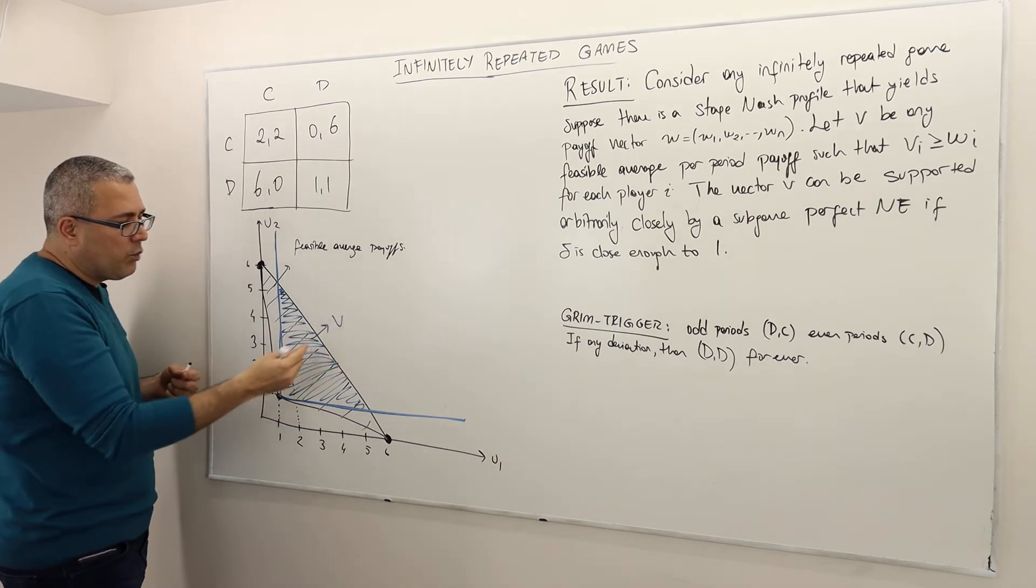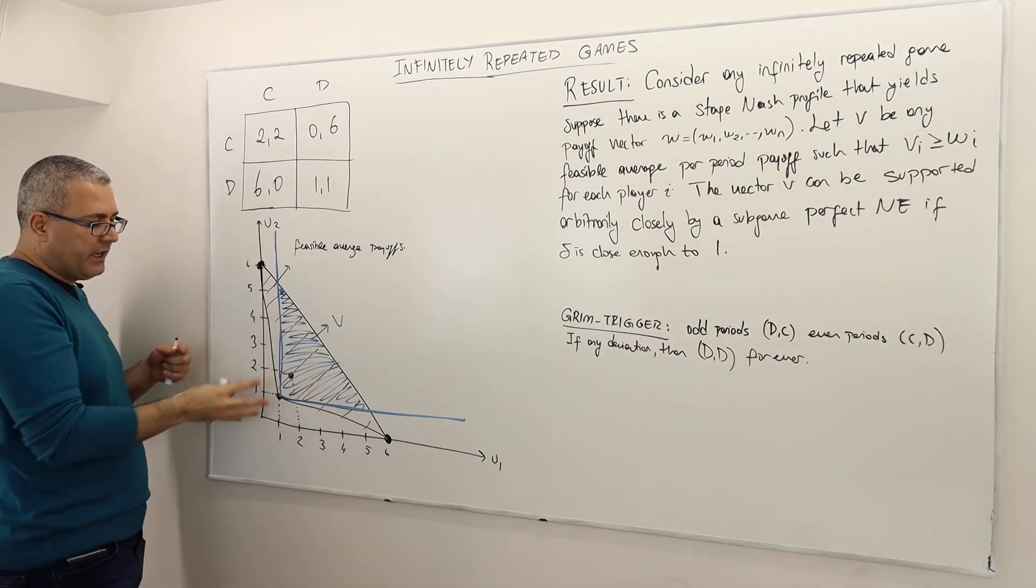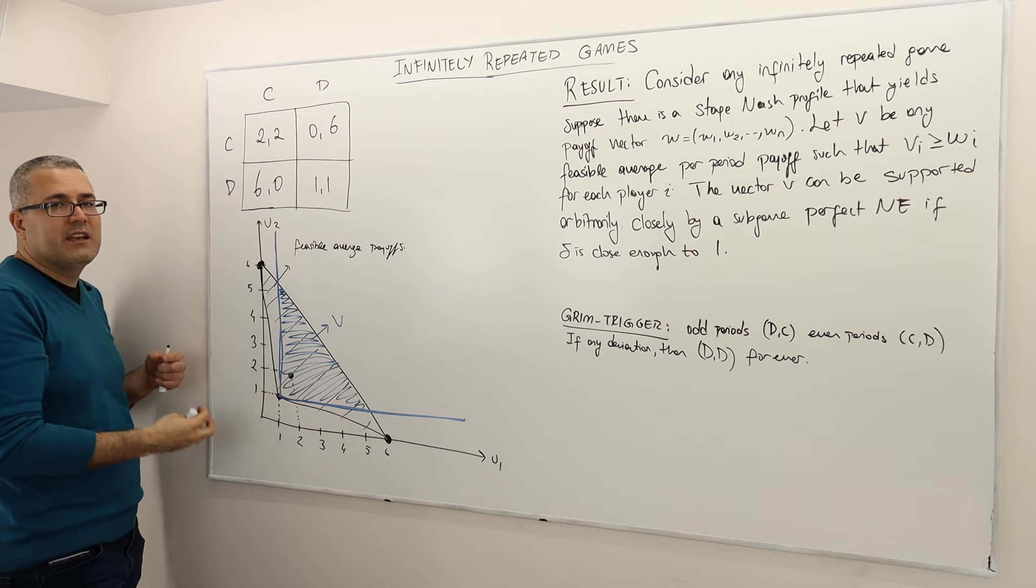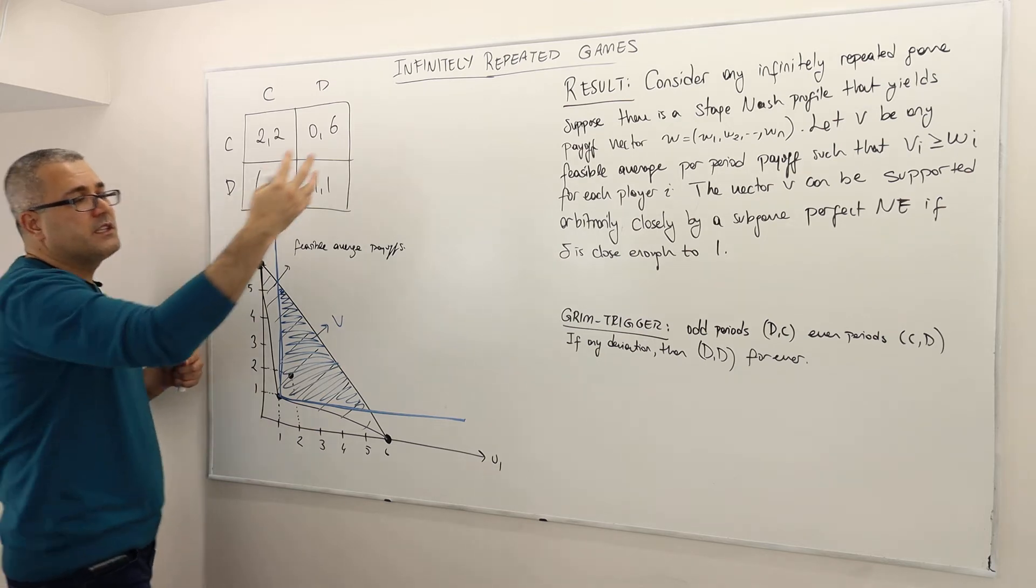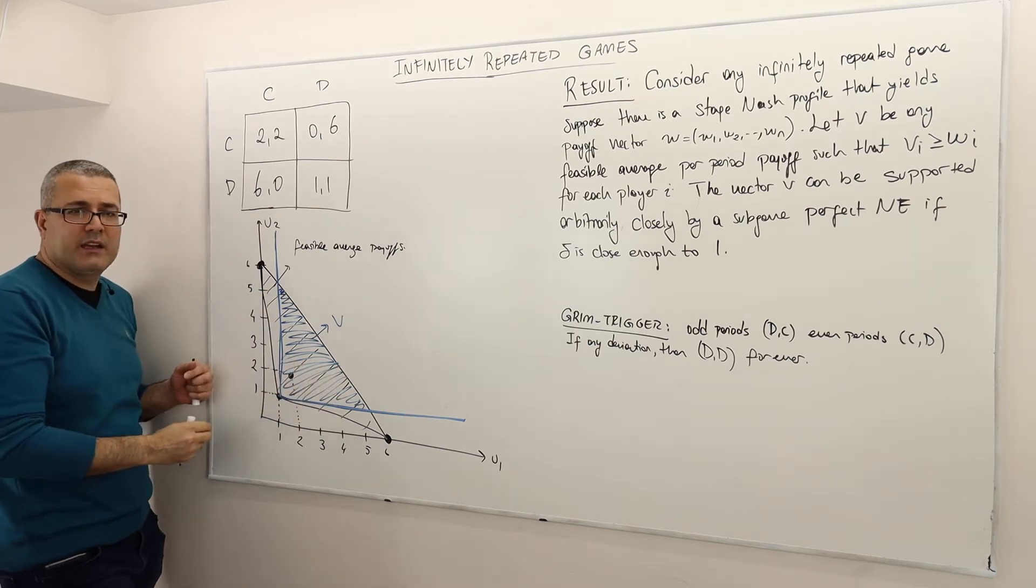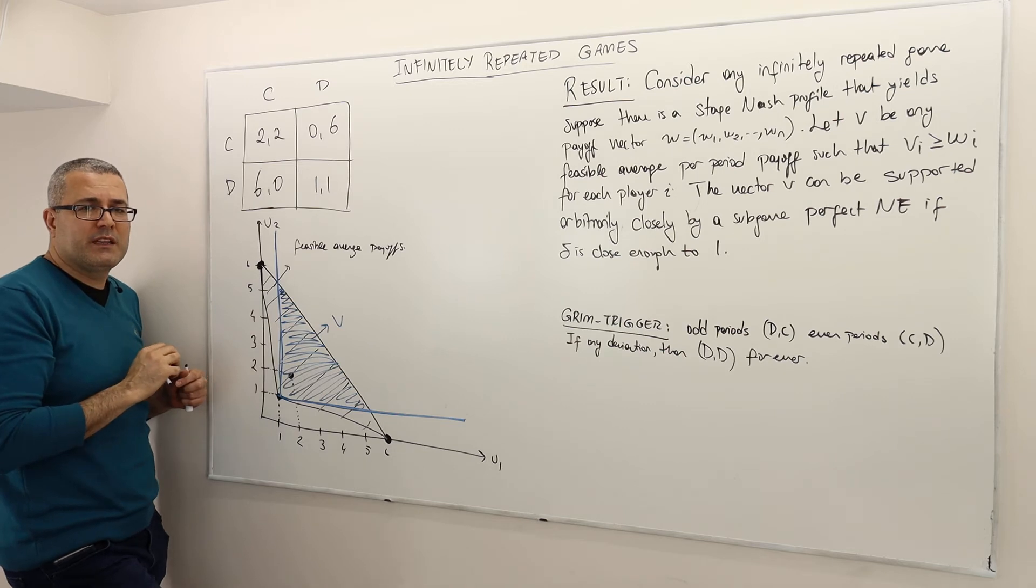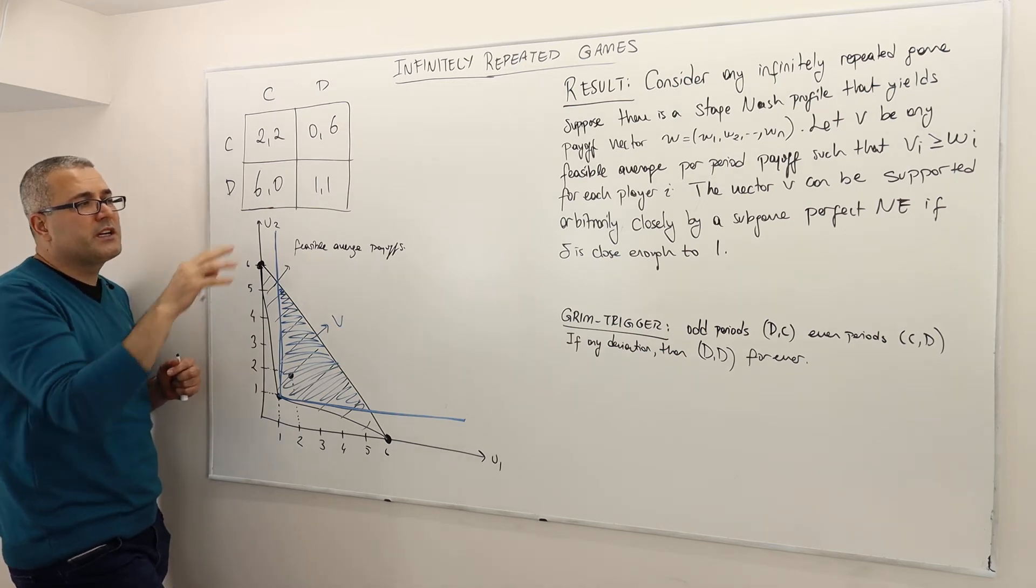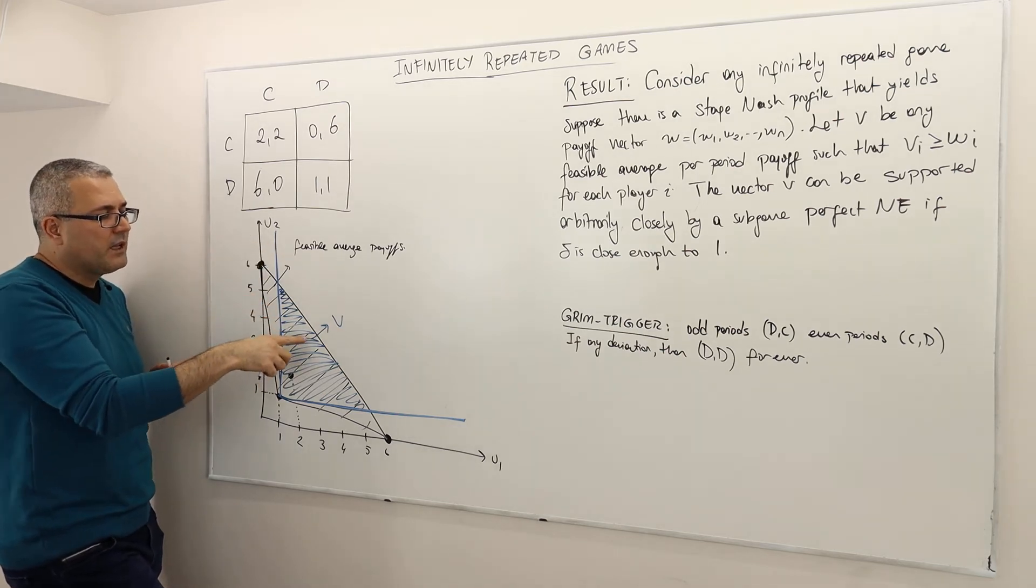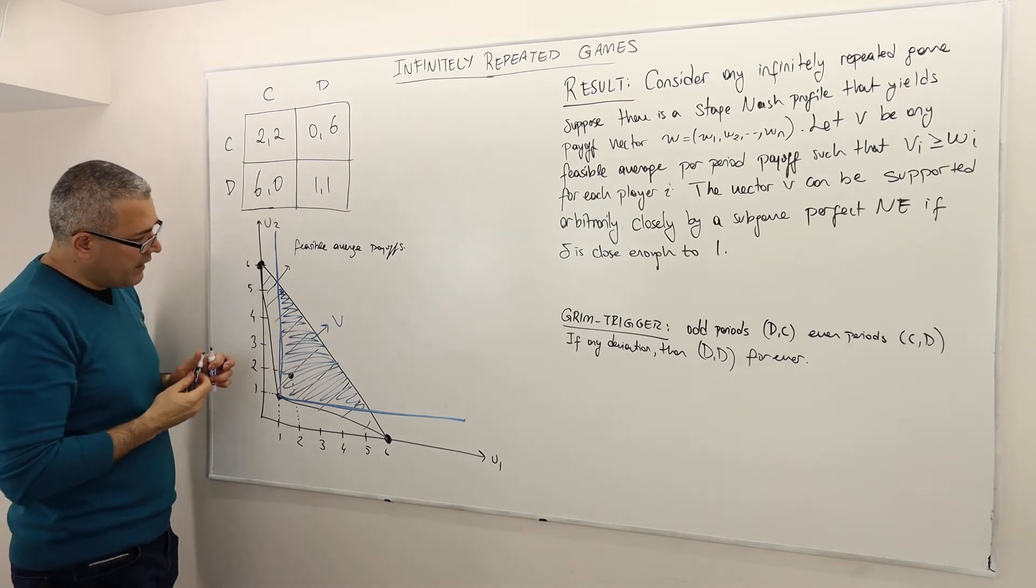So this is where we pick V. It's feasible, and both players achieve payoff higher than 1. So this result says, consider any payoff in this smaller triangle. Actually, we can find some subgame perfect Nash equilibrium where players' payoff in this game gets very close to V, alright? For example, here...